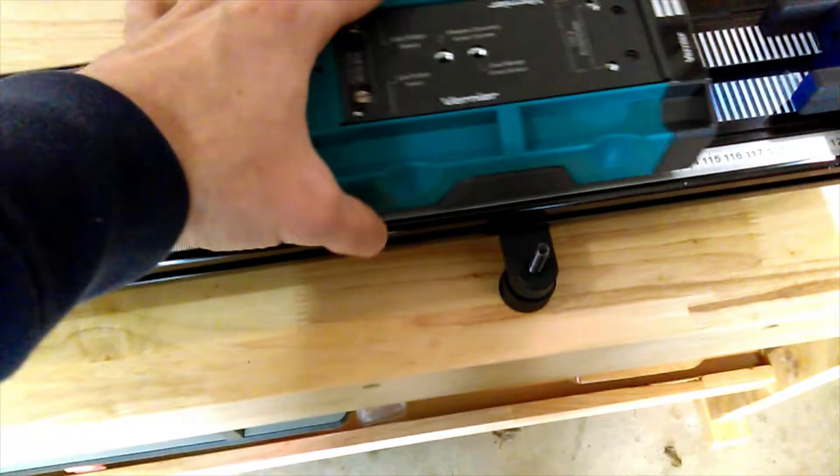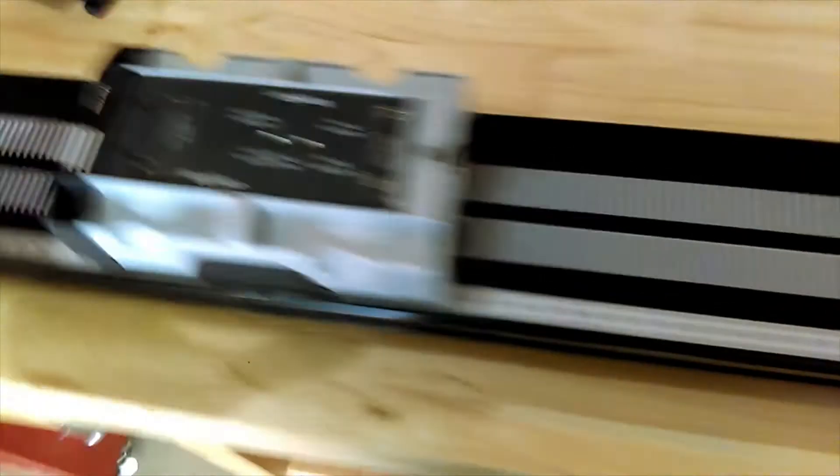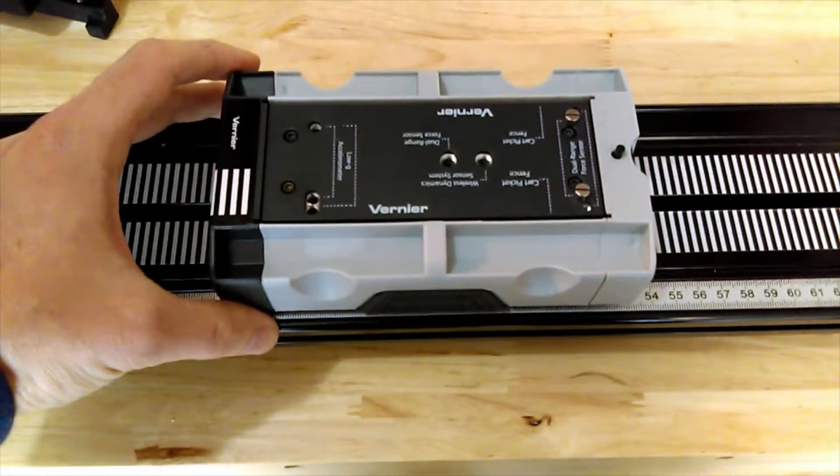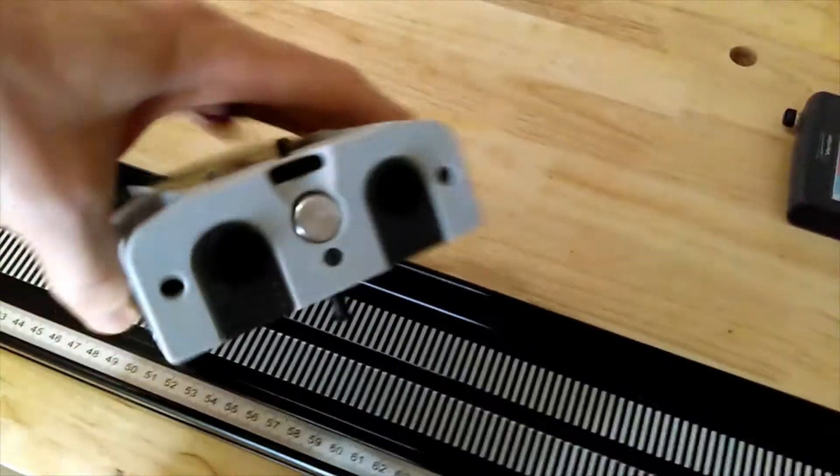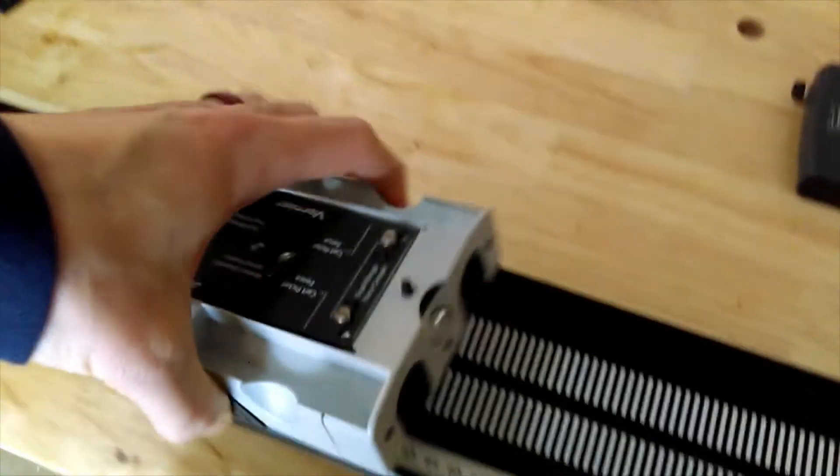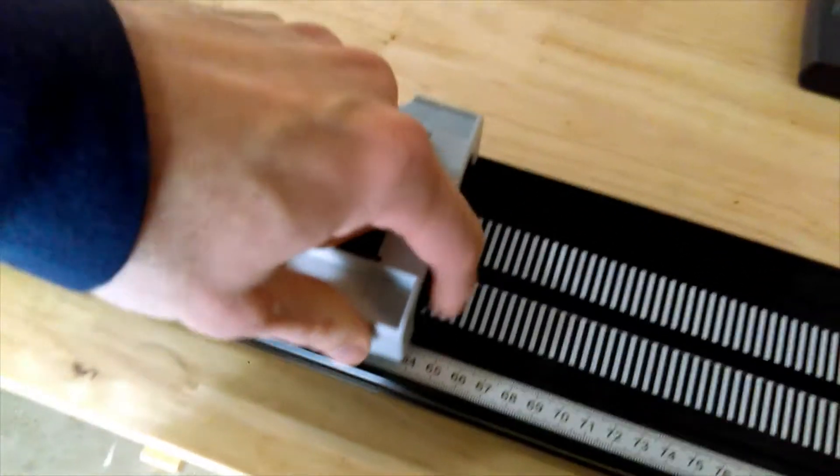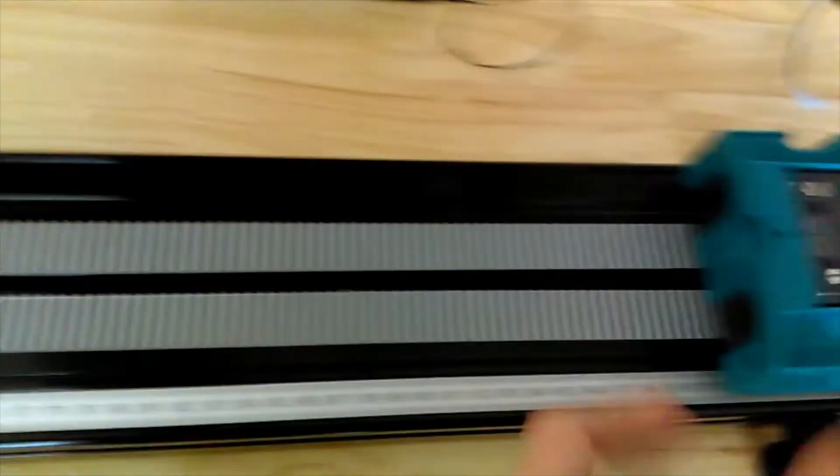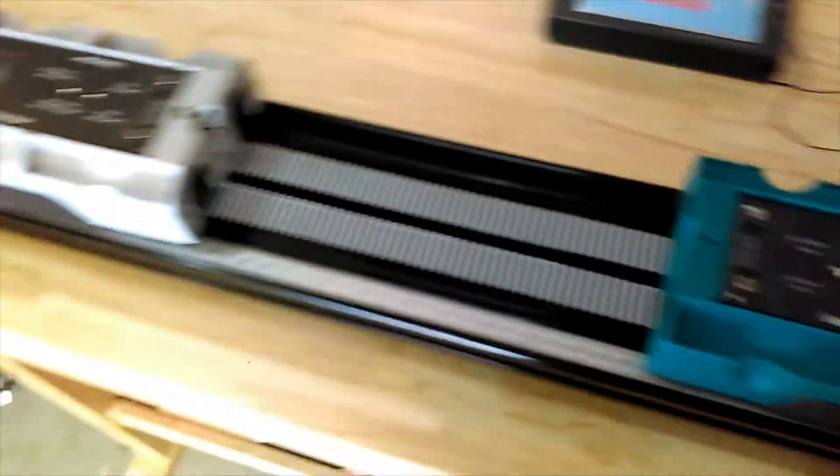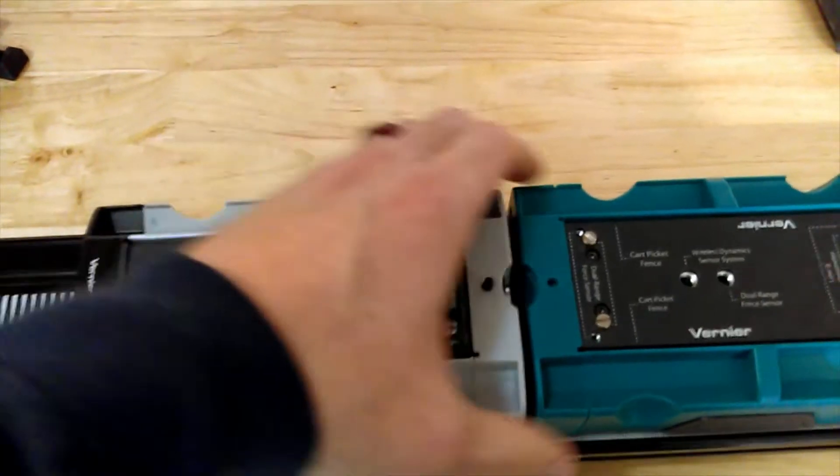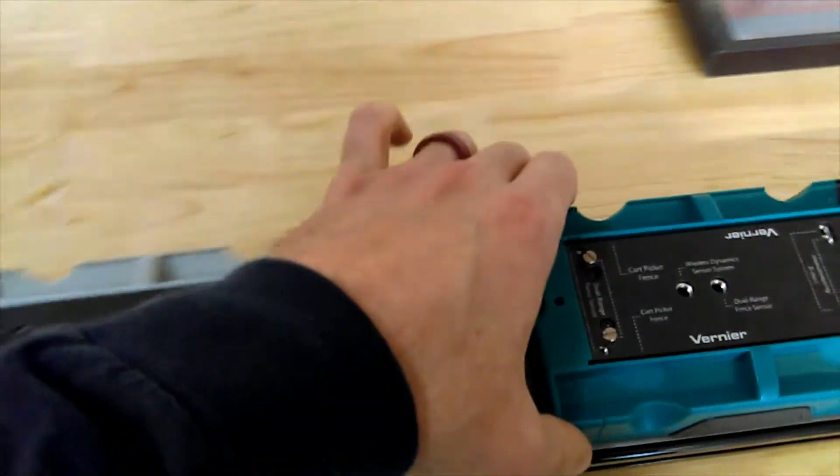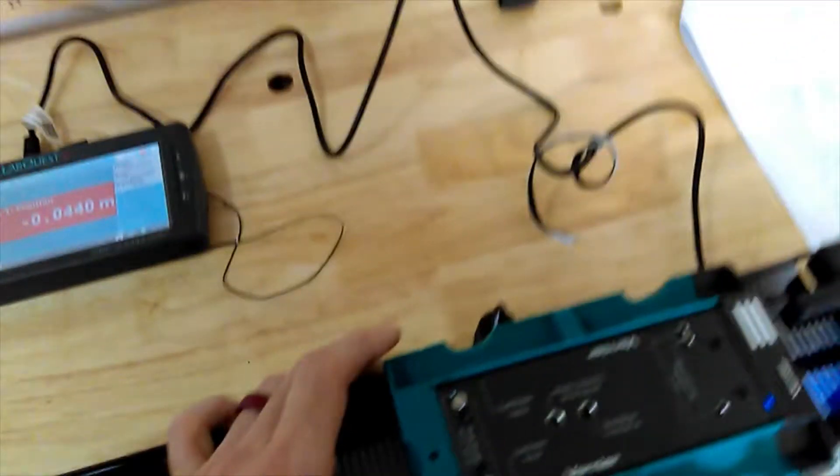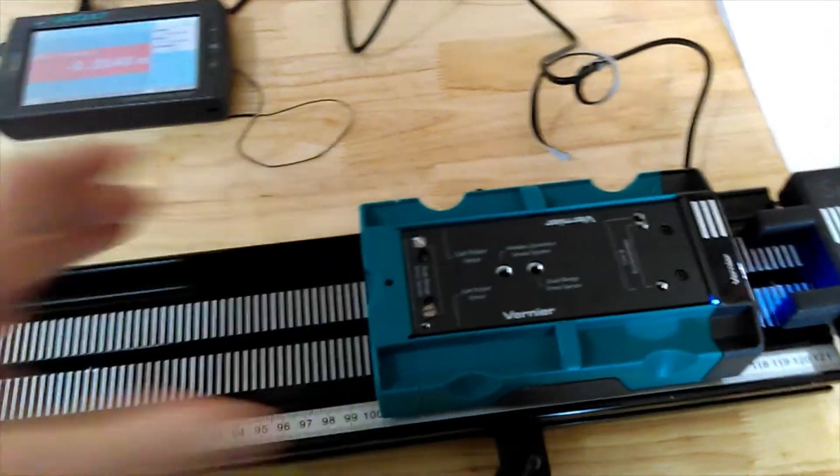This is car one, the teal one. This is car two, the gray one. Right now everything is set up for runs one through three. On the end of each car, there are velcro tabs attached so when the cars collide, they'll get stuck together. This creates our inelastic collisions.